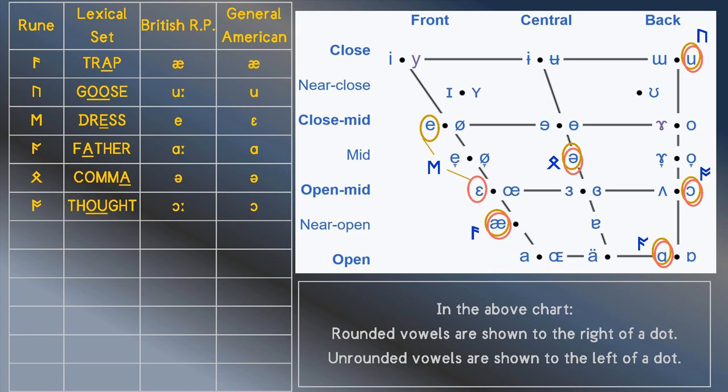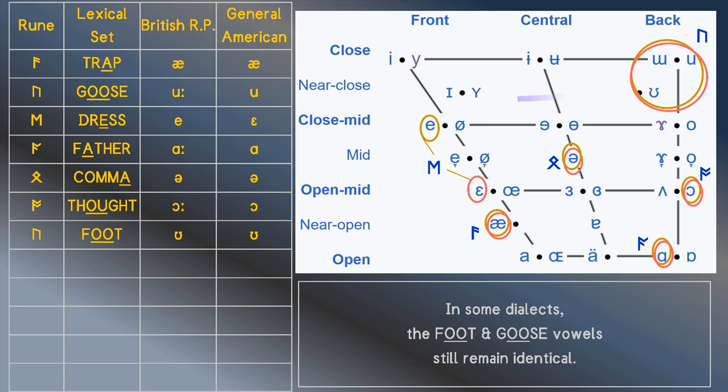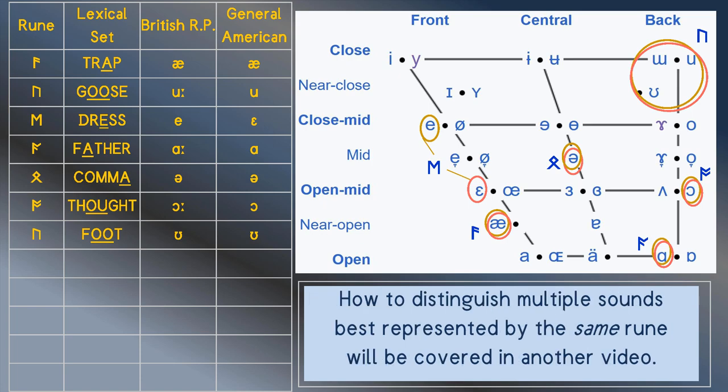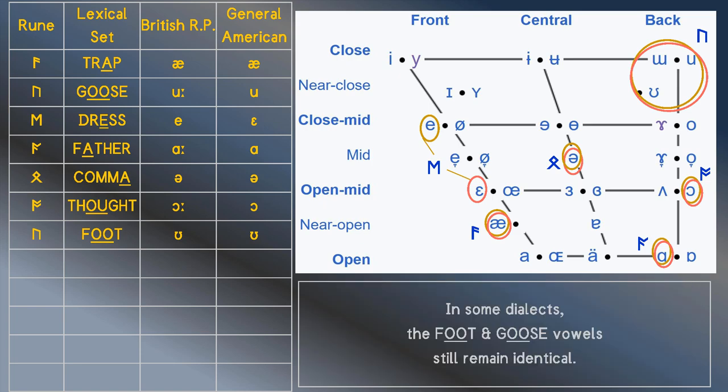Moving on to the foot vowel. Many of you will know that it historically branched from the goose vowel. Even their respective spellings in the Latin script indicate that. Both British RP and general American say it the same way. So let's expand the realm of ur to cover that sound too.